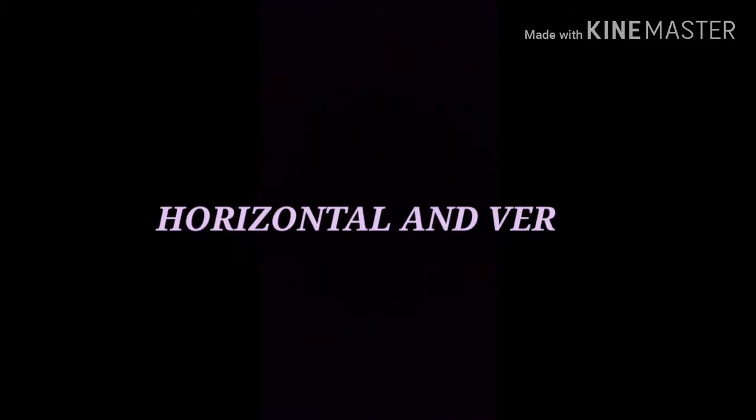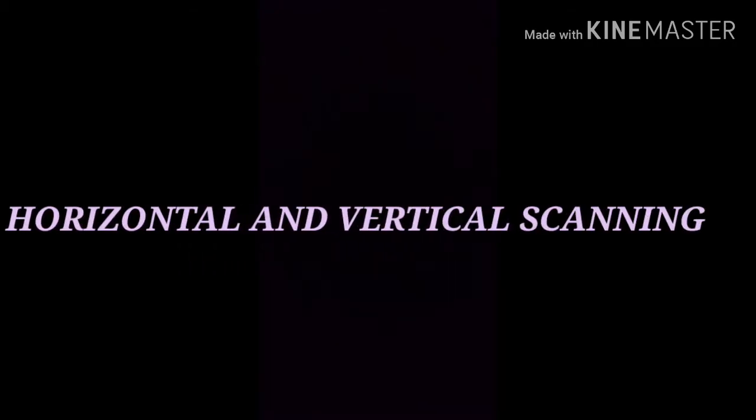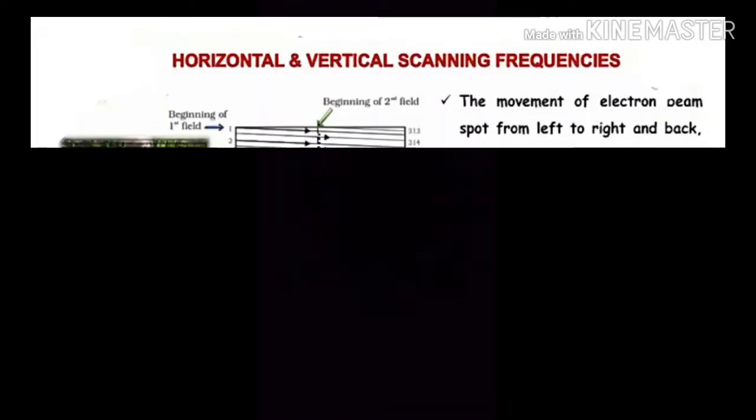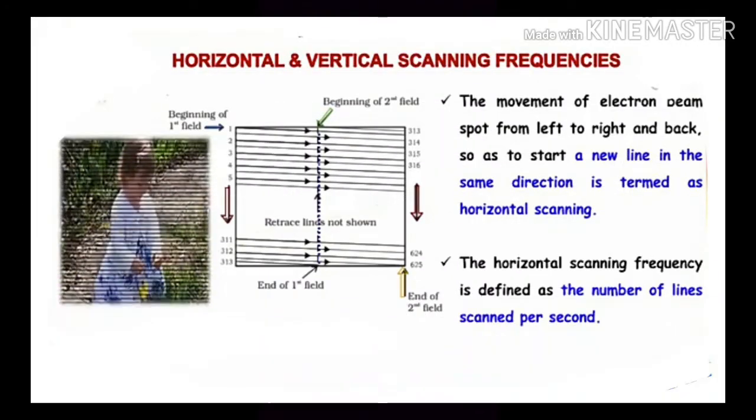Horizontal and vertical scanning frequencies: the movement of electron beam spot from left to right and back so as to start a new line in the same direction is termed as horizontal scanning. The horizontal scanning frequency is defined as the number of lines scanned per second.